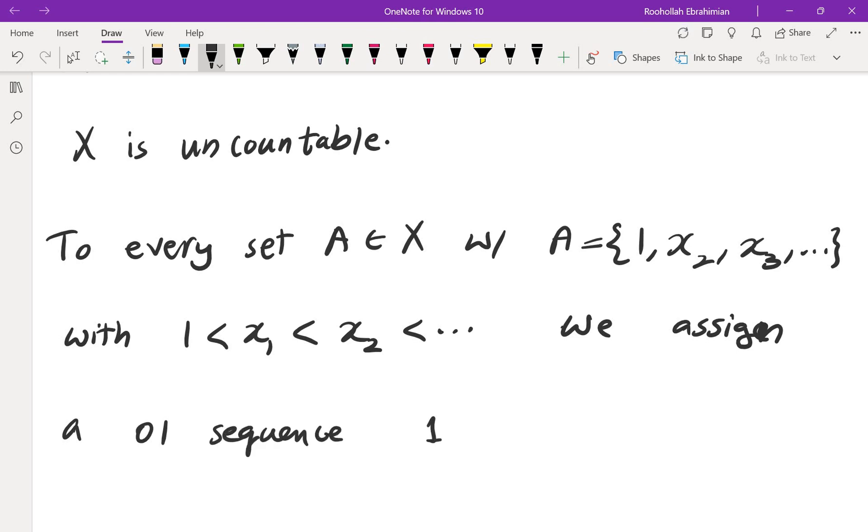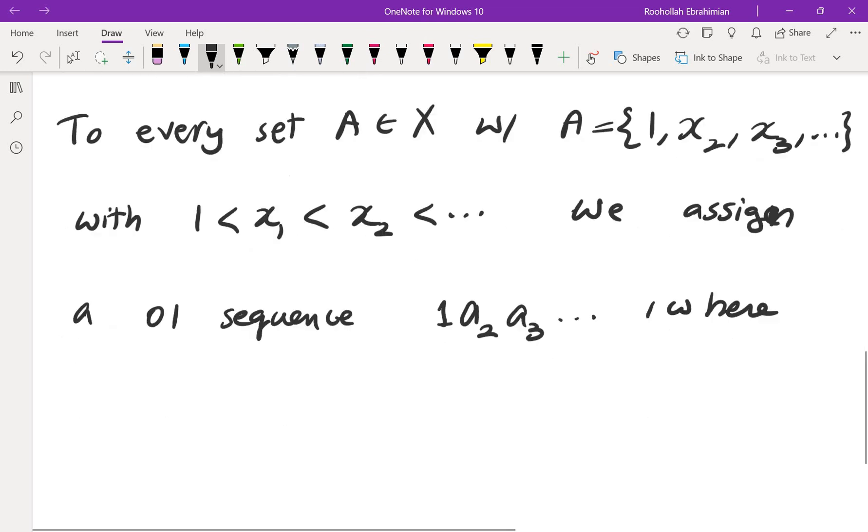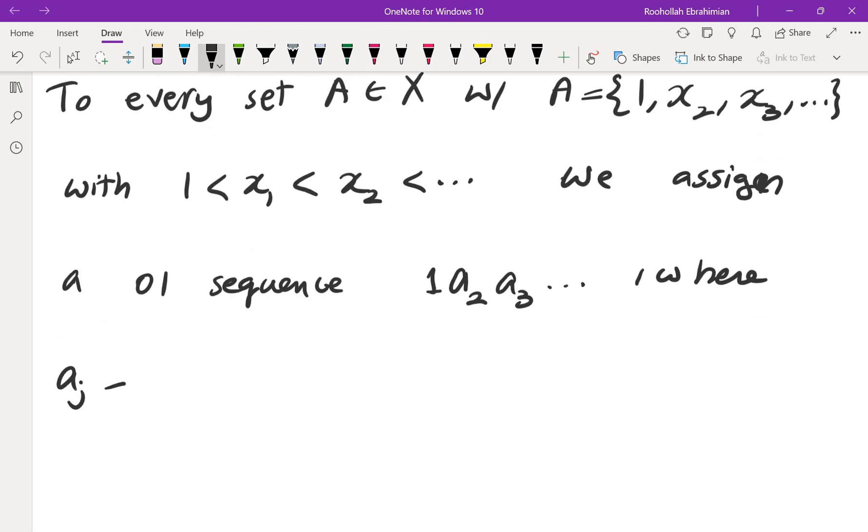So the first one and then the next one would be maybe A2, A3, etc. Where AJ is equal to 0 if J is not in A and 1 if J is in A. So what happens if we do that?